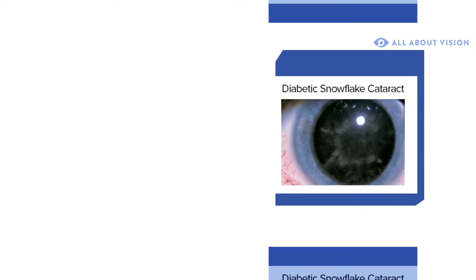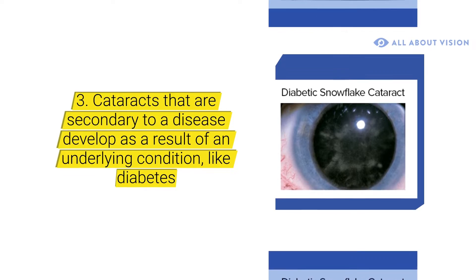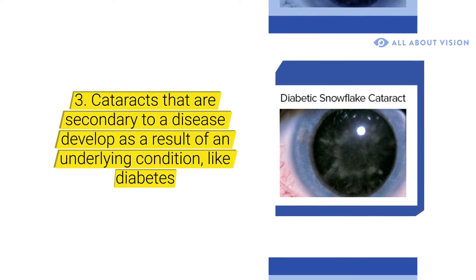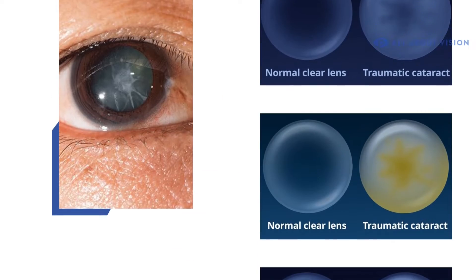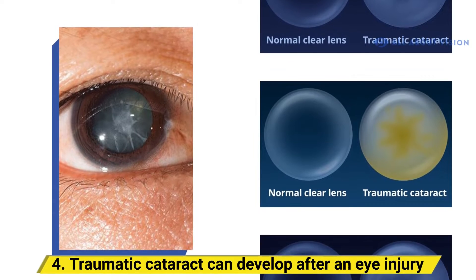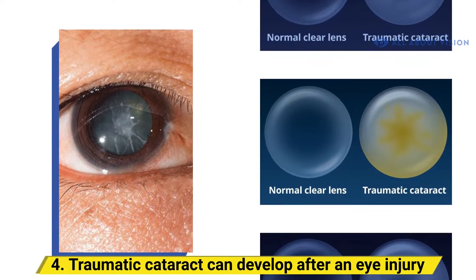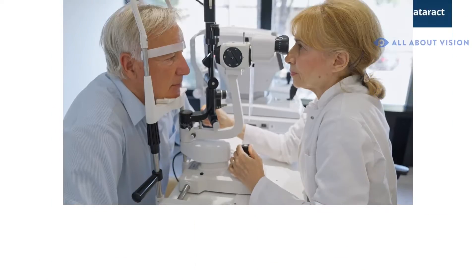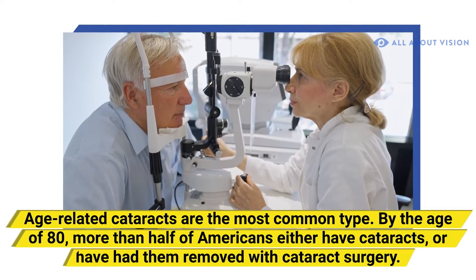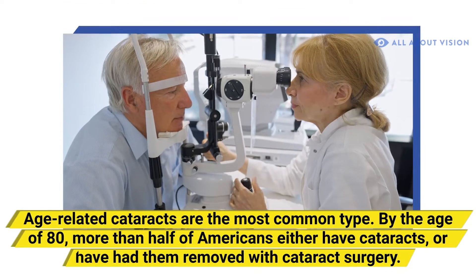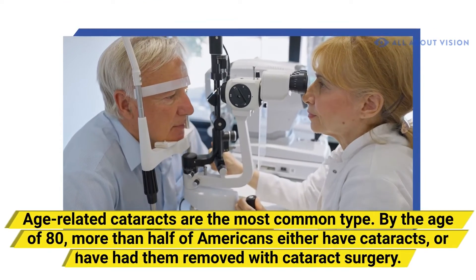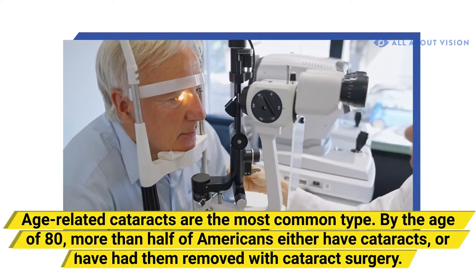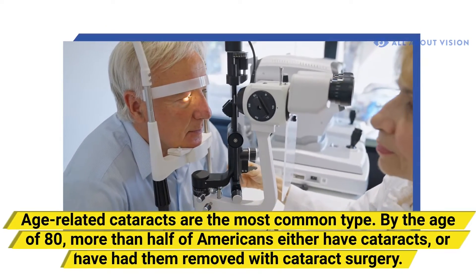Cataracts secondary to a disease, which develop as a result of an underlying condition like diabetes, and traumatic cataracts, which can develop after an eye injury. Age-related cataracts are the most common type. By the age of 80, more than half of Americans either have cataracts or have had them removed with cataract surgery.